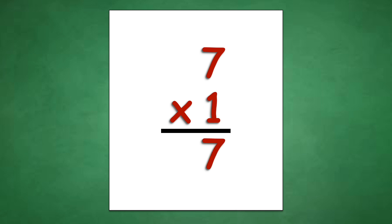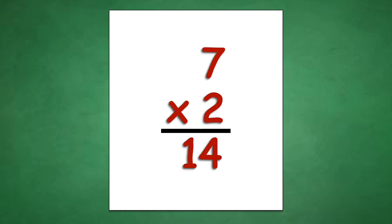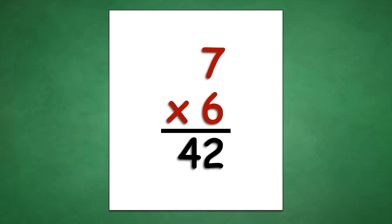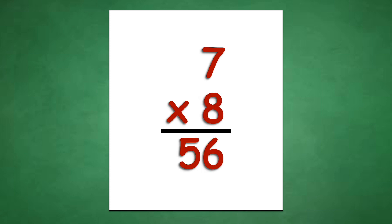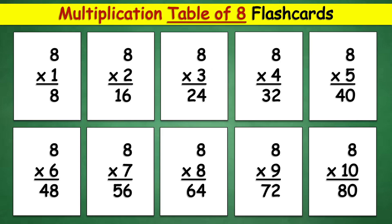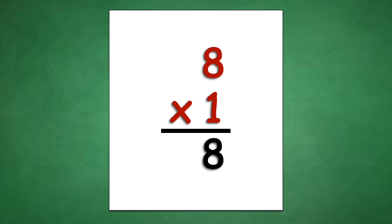Table of 7: 7 times 1 equals 7, 7 times 2 equals 14, 7 times 3 equals 21, 7 times 4 equals 28, 7 times 5 equals 35, 7 times 6 equals 42, 7 times 7 equals 49, 7 times 8 equals 56, 7 times 9 equals 63, 7 times 10 equals 70.